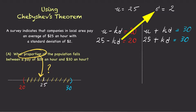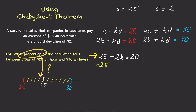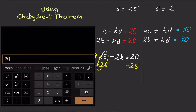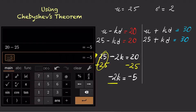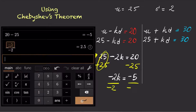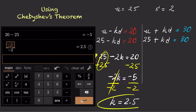We already know the standard deviation is 2. For the lower boundary, we can write 25 minus 2 times k equals 20. To solve for k, first subtract 25 on both sides and we get negative 2 times k equals negative 5. Now divide both sides by negative 2 and we get k equals 2.5.